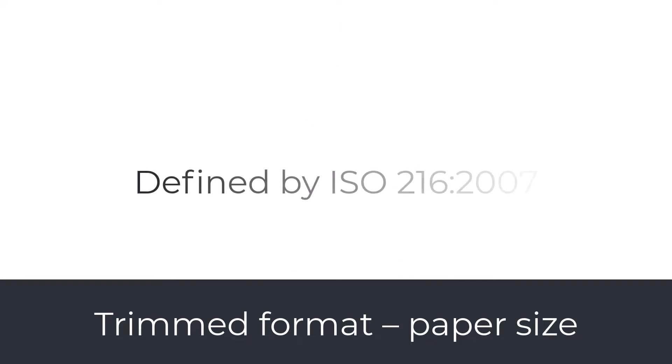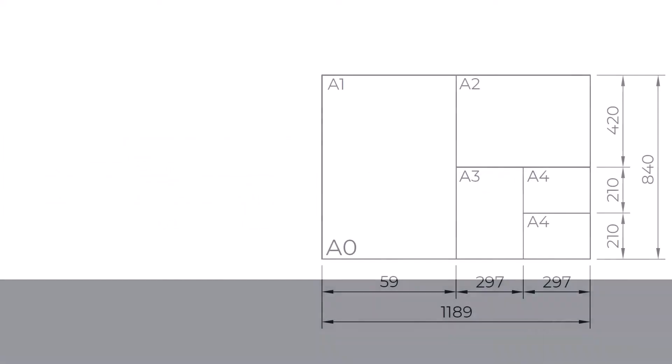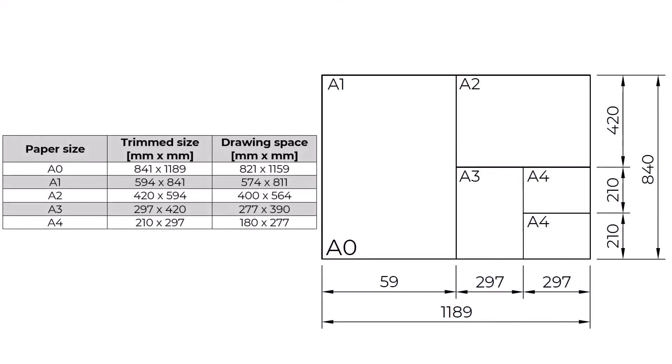Paper sizes are defined by ISO 216:2007. The engineering drawing should be made on the smallest possible paper size allowing clarity and resolution. The most used paper sizes are A0, A1, A2, A3, and A4.